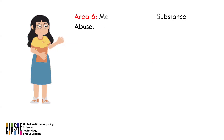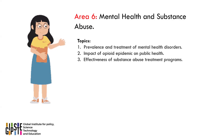Area 6: Mental Health and Substance Abuse. Here are three topics for mental health and substance abuse to be considered: 1. Prevalence and treatment of mental health disorders. 2. Impact of opioid epidemic on public health. 3. Effectiveness of substance abuse treatment programs.